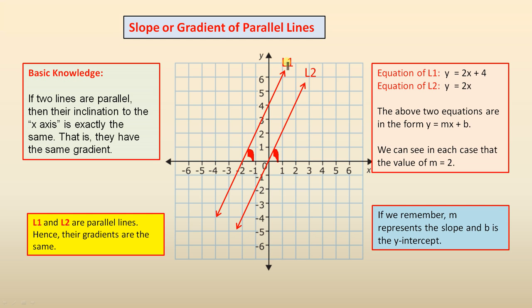Now I've nicknamed this line L1, and I've named this line here L2. L1 and L2 are parallel lines, hence their gradients are the same. The equation of L1, y = 2x + 4. The equation of L2, y = 2x.